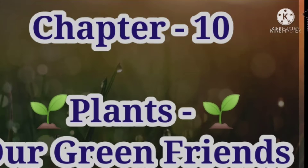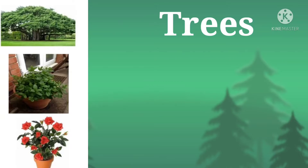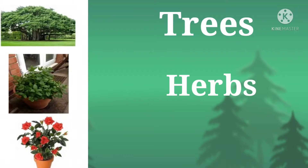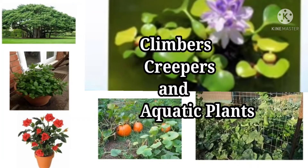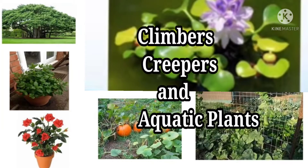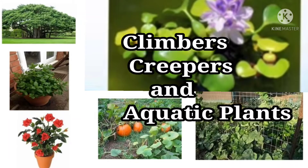Firstly, let us revise Part 1. As you can see in this picture, children, we have learnt different types of plants. The first one is a tree. Second, mint plants, which are herbs. Next, rose plants, which are called shrubs. Now we will learn some more types of plants: climbers, creepers, and aquatic plants.